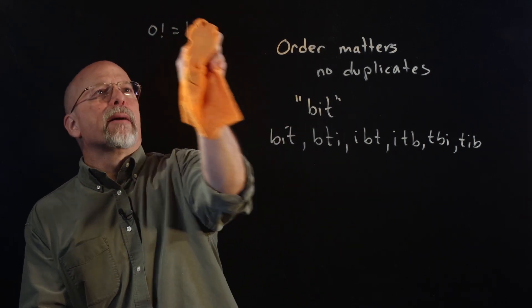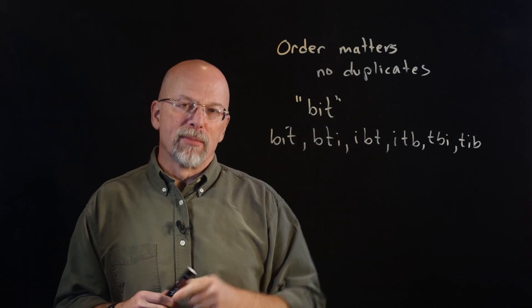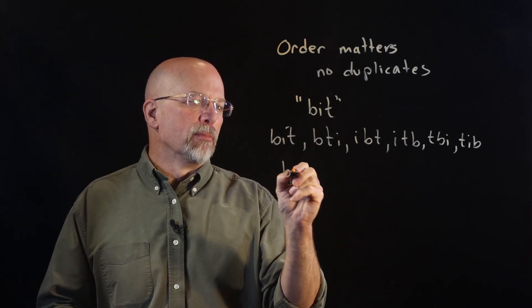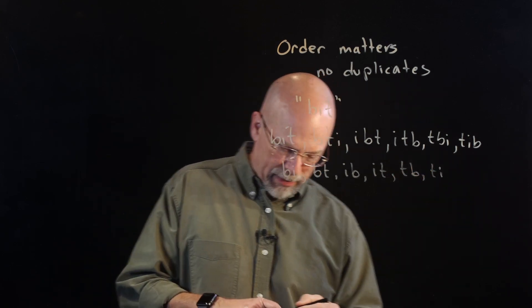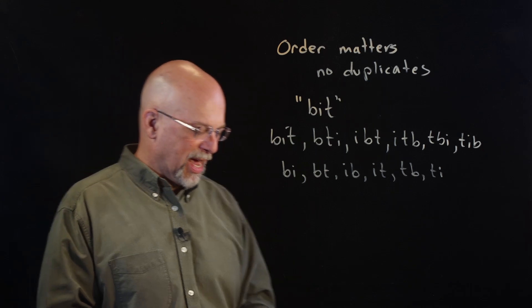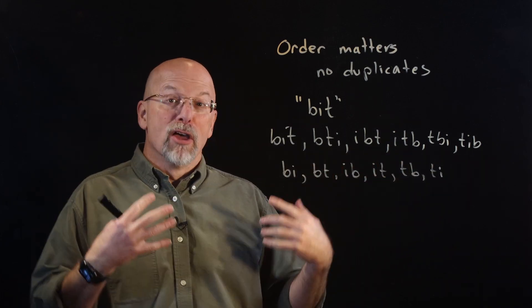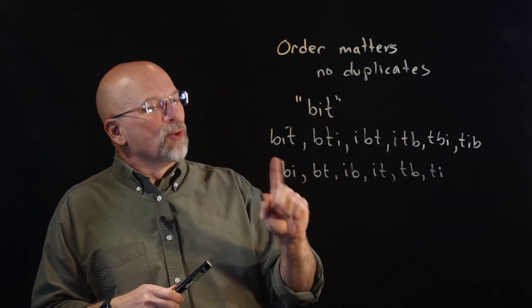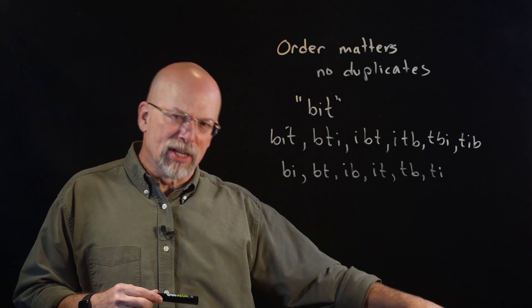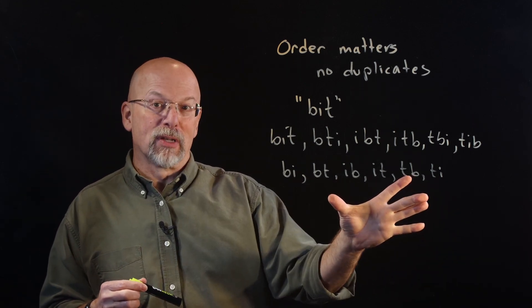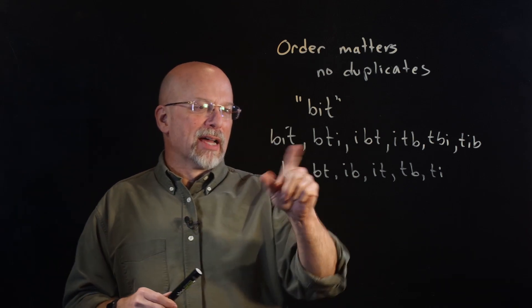What if I wanted to create all sequences of length two from the letters B, I, and T? We'd get: BI, BT, IB, IT, TB, TI — still six. Interestingly, picking two letters already designates which one character is left over. When picking two of three characters, the remaining one letter always ends up last in the sequence, so the count is the same as using all three.